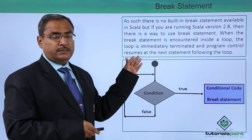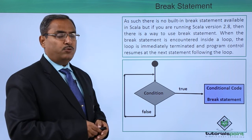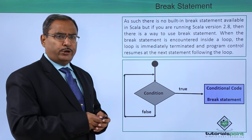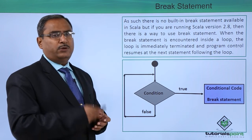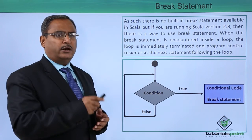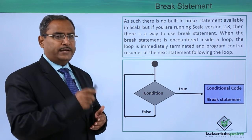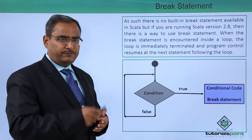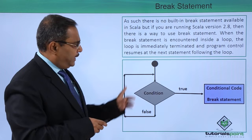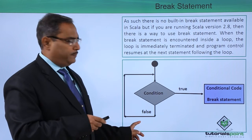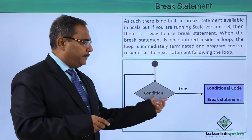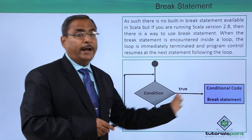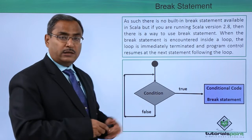When using Scala version 2.8 or more, there is one way to implement the break statement. We usually put a break statement within a loop, and when the condition is true to execute the break statement, immediately the loop terminates and control comes to the next line after the loop construct. Here is a sample flowchart: when the condition becomes true, the conditional code gets executed, the break statement executes, and it comes out from the looping construct.